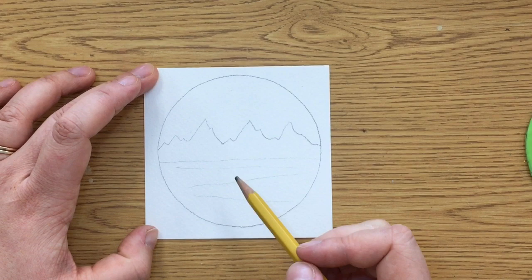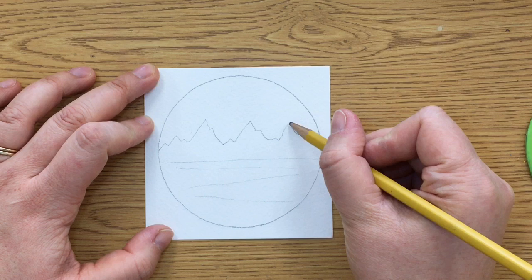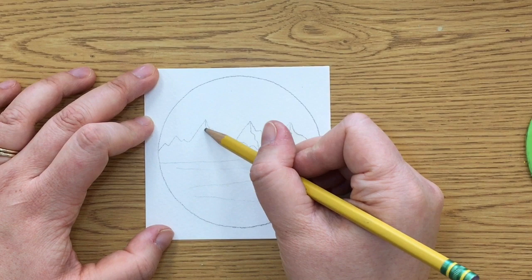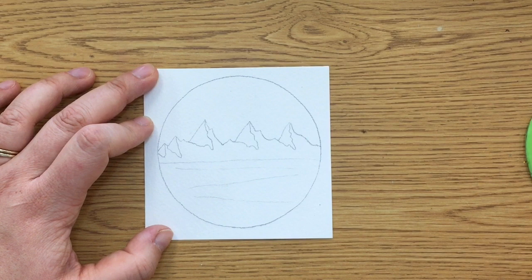And then we are going to be creating these shadows, these little shadow areas on our mountain. So to do that you're going to start at the peak of each mountain and just kind of draw a line like that. Everywhere where there's a little peak you're going to make a little shape for a shadow. And you can always go back and add in a few more.